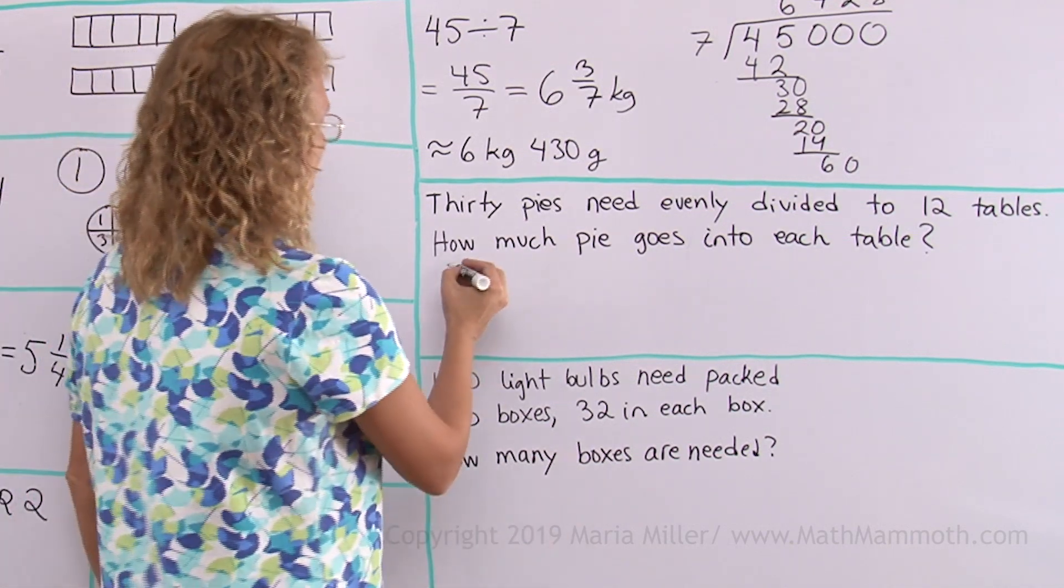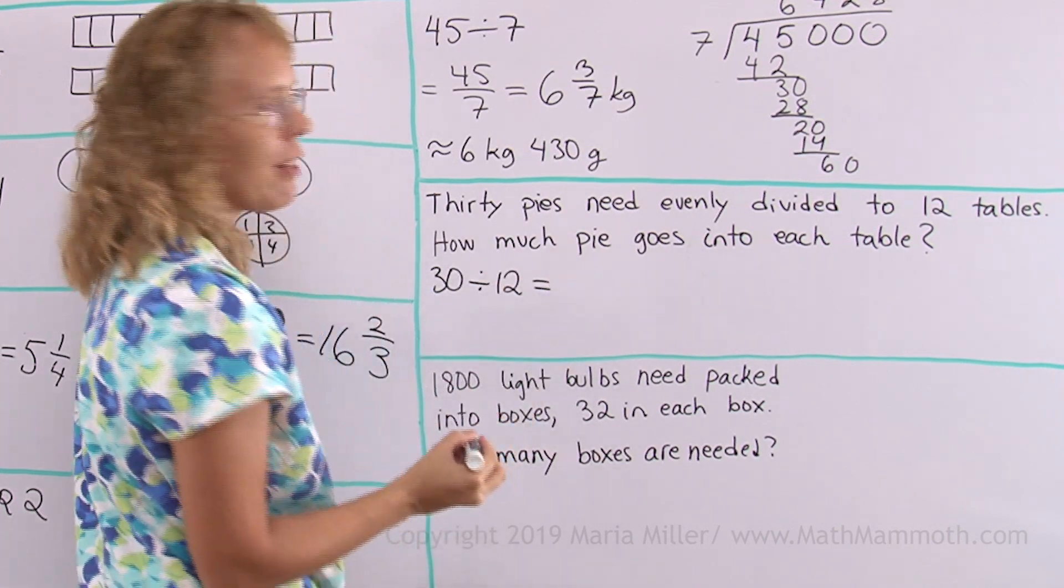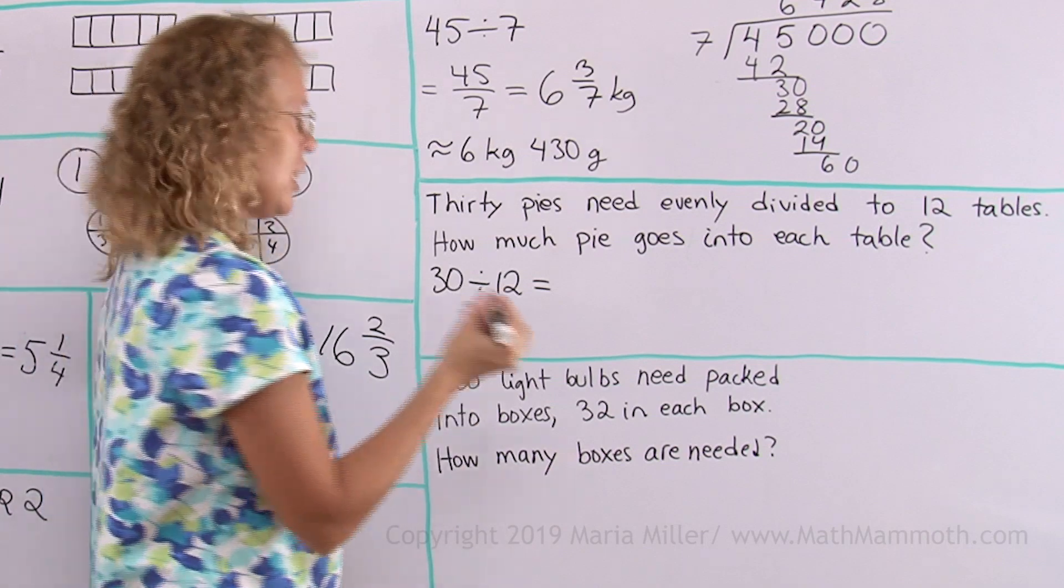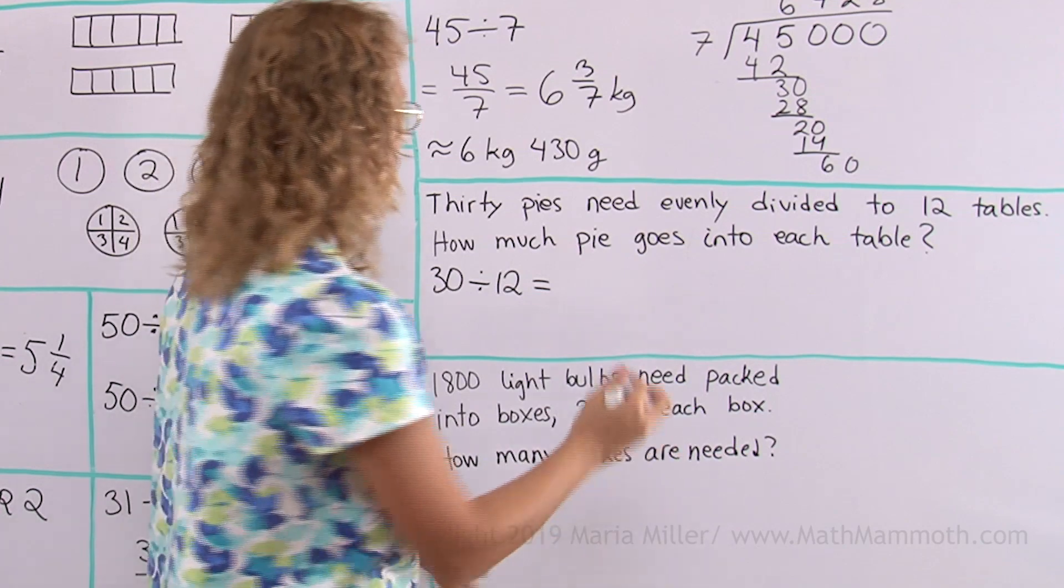This is a division problem. It is 30 divided by 12, okay? We don't want to have leftover pies that we put to the fridge. Instead, we want to, if there's leftover pies, we want to cut them up and put them into each table.